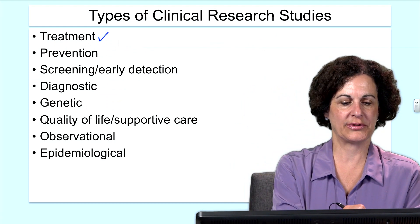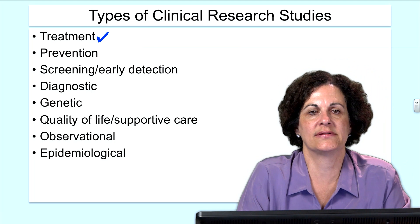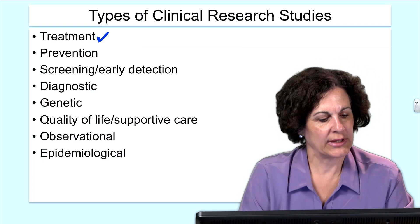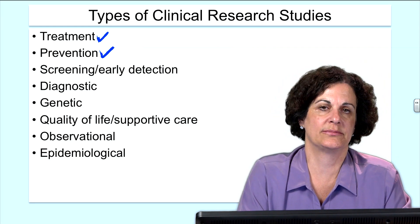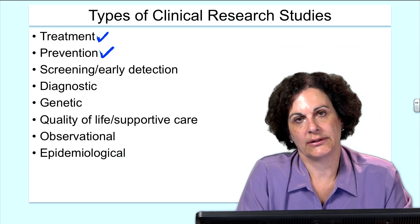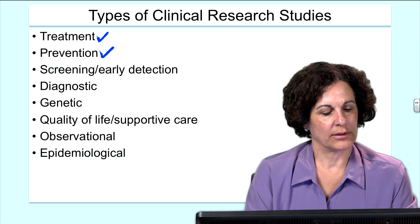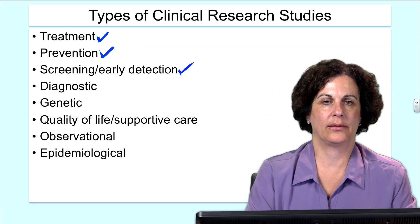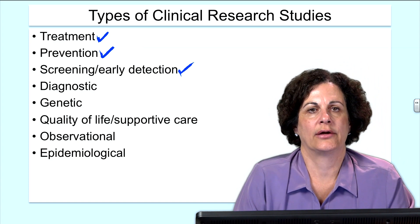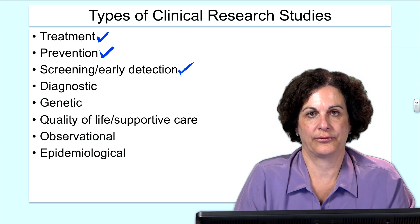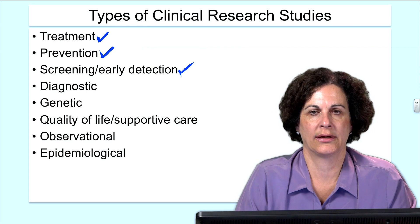Let's talk about the types of clinical research studies. First, treatment studies are meant to treat the disease of study — an intervention with a drug, device, or biologic aimed at treating disease and alleviating symptoms. Prevention studies give a particular drug to prevent disease; for instance, in Alzheimer's disease, we might provide an agent to cognitively impaired individuals and see if we can prevent progression to full Alzheimer's disease. Screening studies — for example, a recent study found that CT scans were better than X-rays for screening lung disease in patients who had smoked.